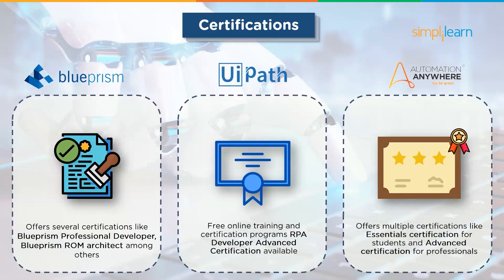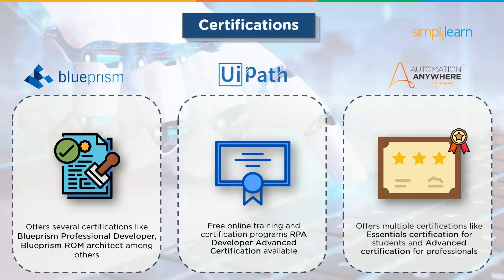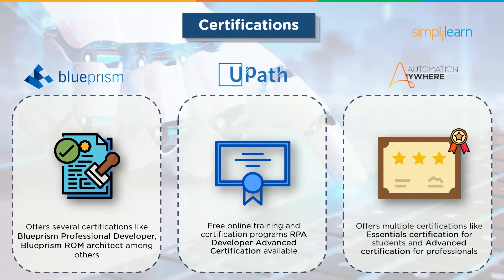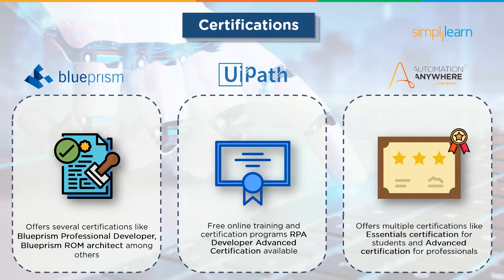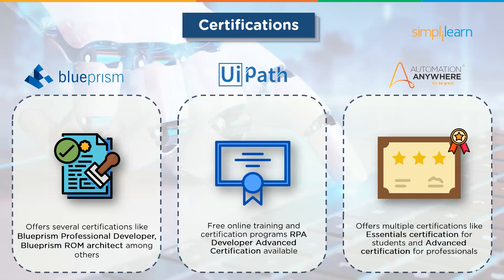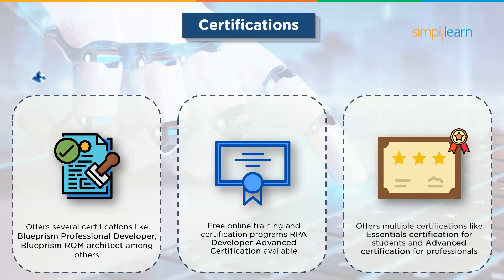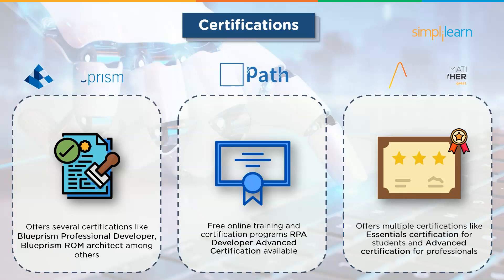Moving on to the last comparison factor, Certifications. Blue Prism offers several certifications like Blue Prism Professional Developer and Blue Prism ROM Architect among others. UiPath offers free online training and certification programs like RPA Developer Advanced Certification. Automation Anywhere has also recently launched multiple certifications like Essential Certification for Students and Advanced Certifications for Professionals.